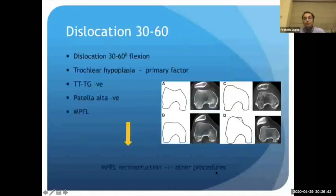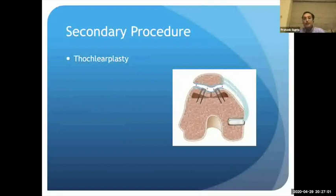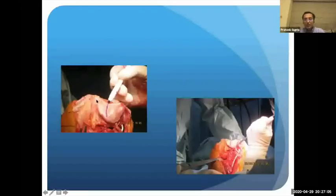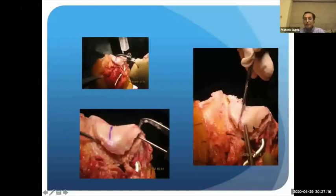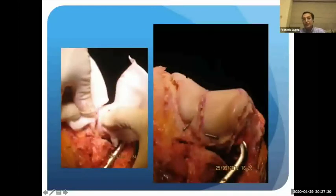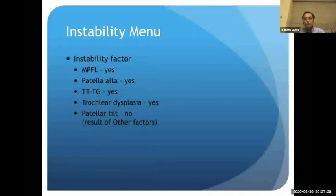For skeletally immature patients, soft tissue temporizing procedures such as Galeazzi or Roux-Goldthwait — shifting part of the patellar tendon — can be used to buy time. If dislocation occurs between 30 to 60 degrees of flexion, have a high suspicion of trochlear hypoplasia or dysplasia. Review CT, MRI, and X-rays carefully. If the trochlea is found to be the culprit, a trochleoplasty is required — removing bone beneath the trochlear facets, depressing the trochlea, and deepening the sulcus to keep the patella engaged in the groove.